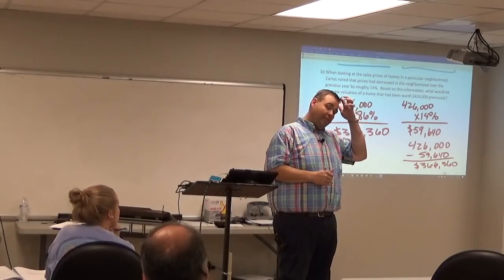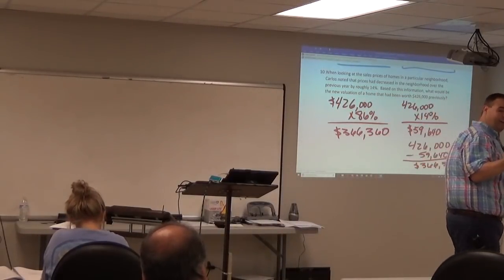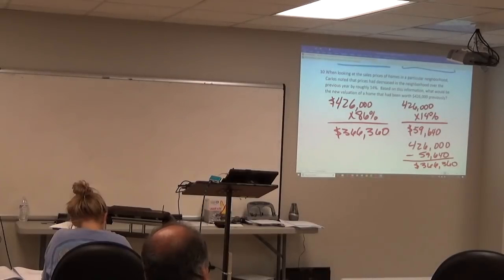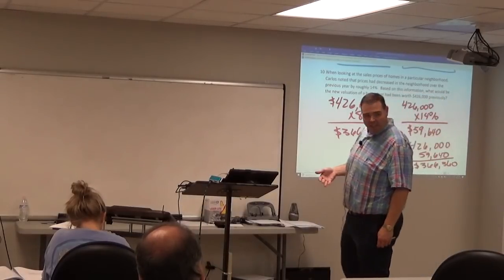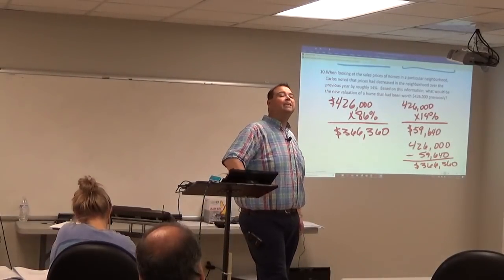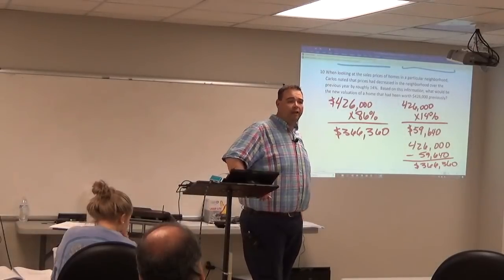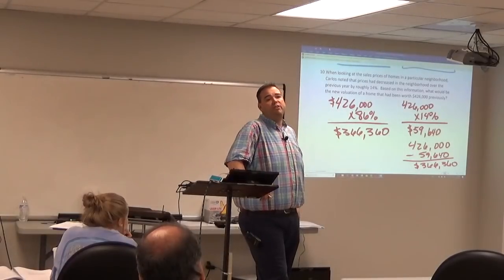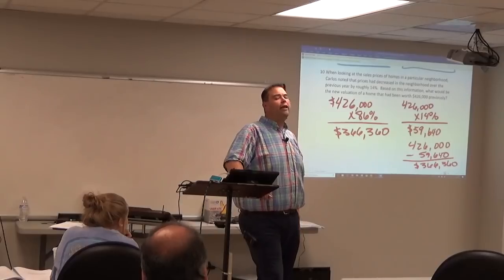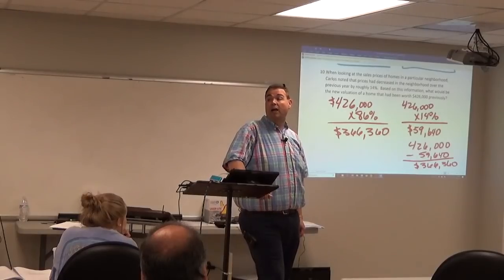A student asks about the average commission nowadays. I'll forgive you for asking because we're early in the class, but you just asked me to commit a felony by answering that question. There's a law called the Sherman Anti-Trust Act, and it's a violation of that law for me to answer, because in theory there should be no average commission. Commission is supposed to be an individually negotiated thing. I should never compare my commissions to what other people charge — if there's no standard, there's no way to compare.